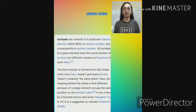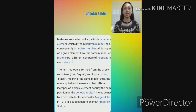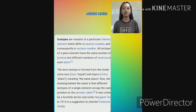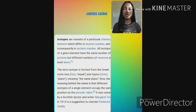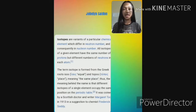Isotopes are variants of a particular chemical element which differ in neutron number and consequently in nucleon number. All isotopes of a given element have the same number of protons but different numbers of neutrons in each atom. The term isotope is formed by the Greek roots isos or equal and tupos or place, meaning the same place.